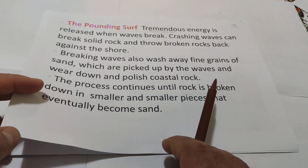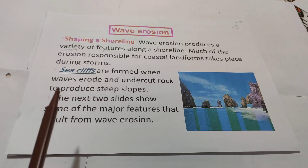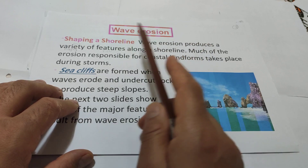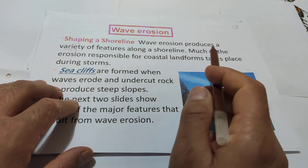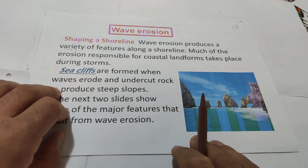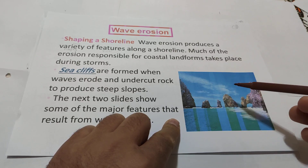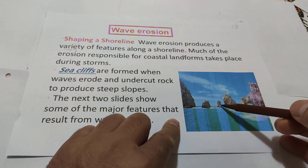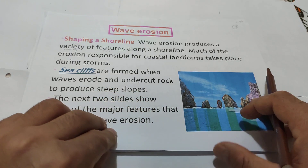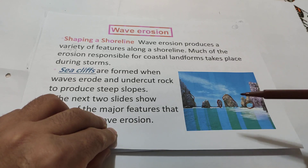Wave erosion shapes a shoreline. Wave erosion produces a variety of features along a shoreline. Much of the erosion responsible for coastal landforms takes place during storms. Large or huge waves beat the sea rocks or beach rocks, making different shapes. These differently shaped features along the beach are called sea cliffs.